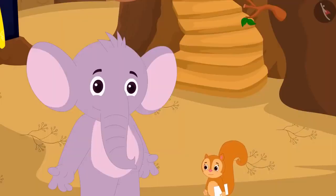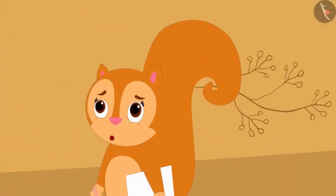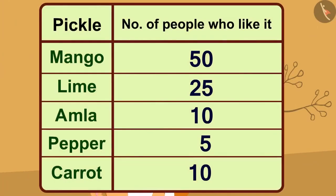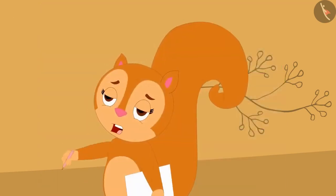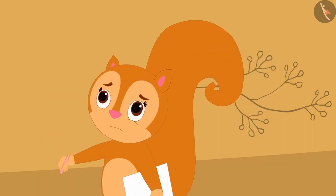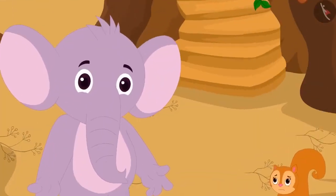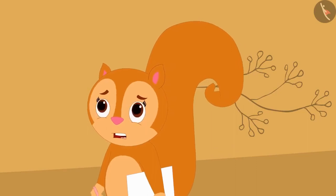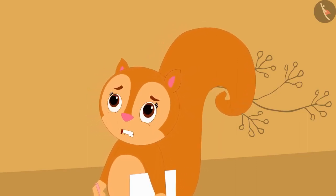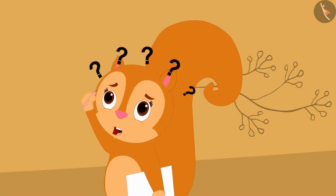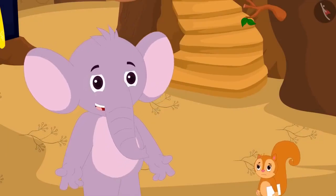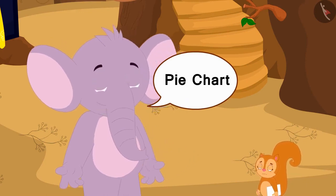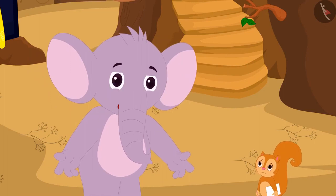They returned to Chanda's house. Appu, I am tired of wandering around the village all day long. And now I don't understand anything after seeing so many numbers. Is there any way we can understand all this information at one glance? Yes, Chanda, we can illustrate this information using a pie chart. Through the pie chart, we can illustrate the information in a simple way by making a circle. Let me teach you how to make it.